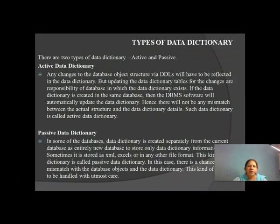Data dictionaries are of two types: active data dictionary and passive data dictionary. An active data dictionary is maintained within the same database. When any changes are made to the database structure through DDL (Data Definition Language), the active data dictionary automatically updates itself. So there is no mismatch in an active data dictionary when changes occur in the database.